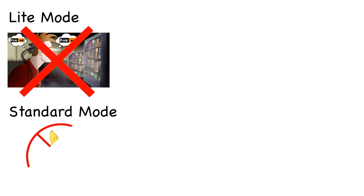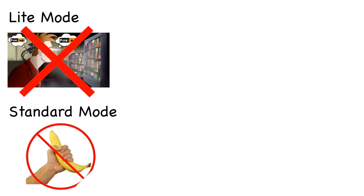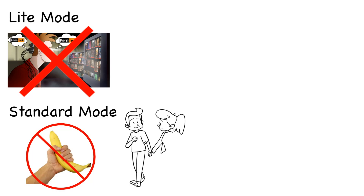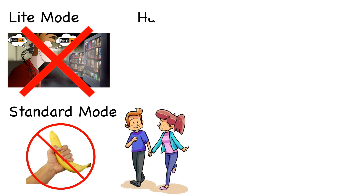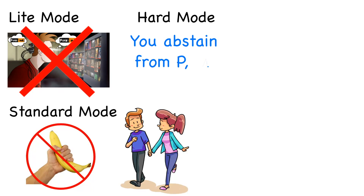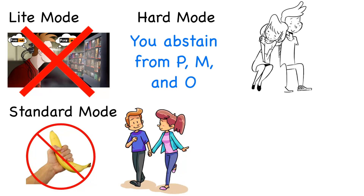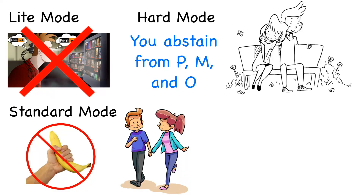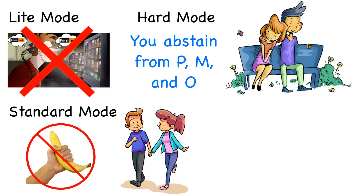On Standard Mode, you abstain from adult content and M. This is a great mode to practice if you're currently in a romantic relationship. On Hard Mode, you abstain from adult content, M, and O. This is a great mode to practice if you're currently single and don't want to carry this problem into your next relationship.